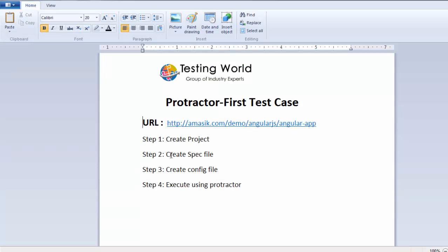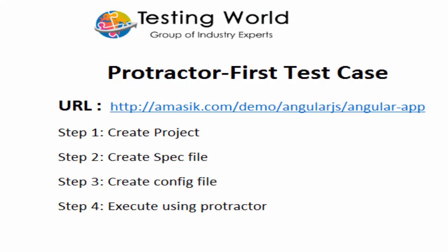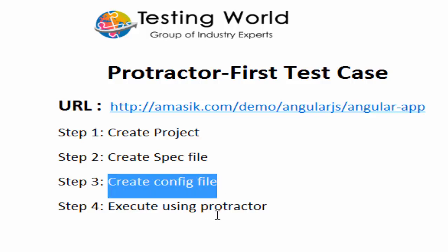So the first step was to create the project, the second step was to create the spec file — we have covered both steps. Now I am going to create a config file. The config file is where we define all configurations: which browser to use, what the URL of the hub is (which we start with the WebDriver Manager), what framework we are using (Jasmine), and other details. I will show you how to define it.